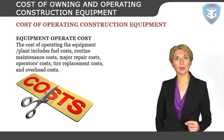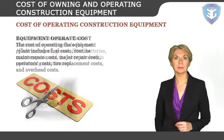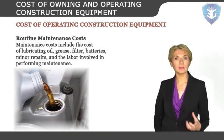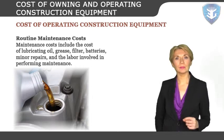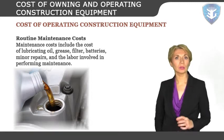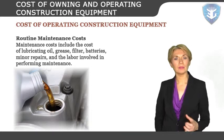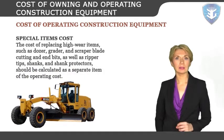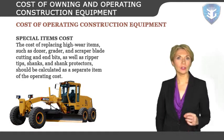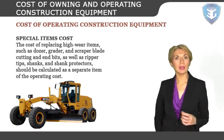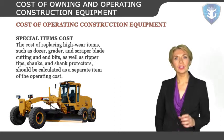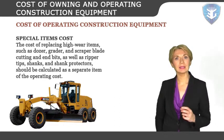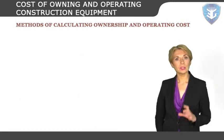Routine maintenance costs include the cost of lubricating oil, grease, filters, batteries, minor repairs, and the labor involved in performing maintenance. The quantity of lubricating oil required can be calculated from the manufacturer's manual, showing the number of hours after which oil changing is needed. Special items cost covers replacing high-wear items such as dozer, grader, and scraper blades, cutting and end bits, ripper tips, shanks, and shank protectors, calculated as a separate item of operating cost. Unit cost is divided by expected life to yield cost per hour.